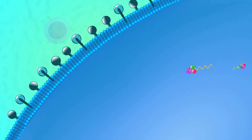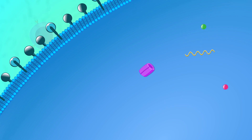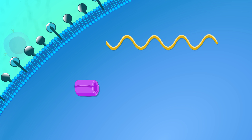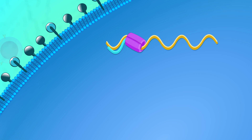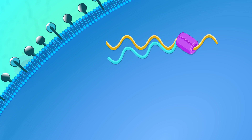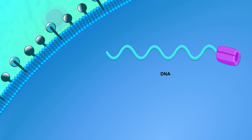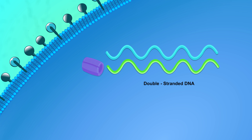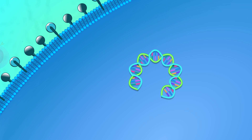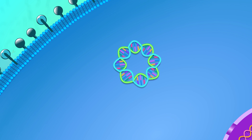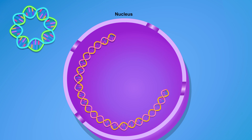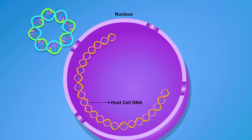Viral RNA and enzymes are released into the cell's cytoplasm. Reverse transcriptase uses the viral RNA to synthesize first a strand of viral DNA and then the complementary DNA strand. The viral DNA then moves to the nucleus of the cell where it integrates into the host cell's DNA.